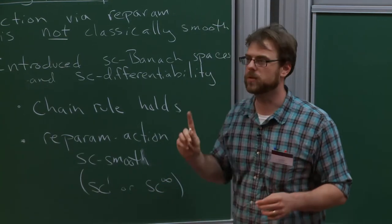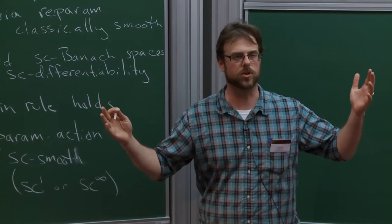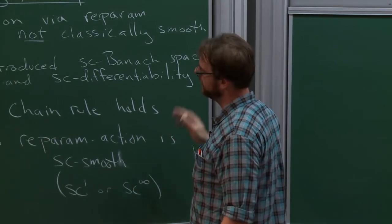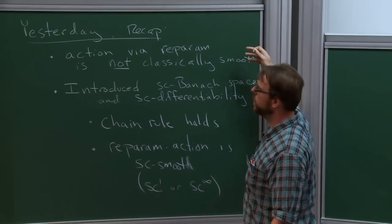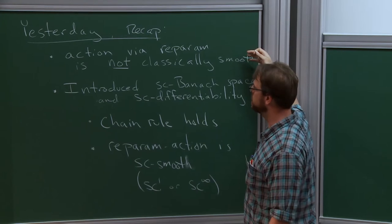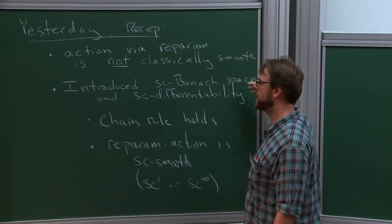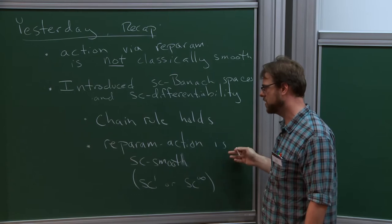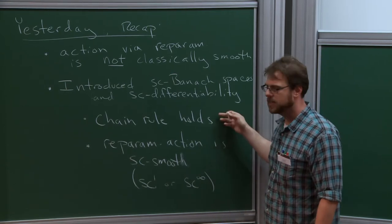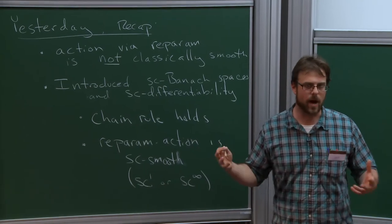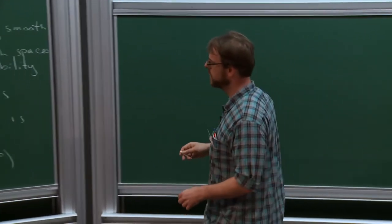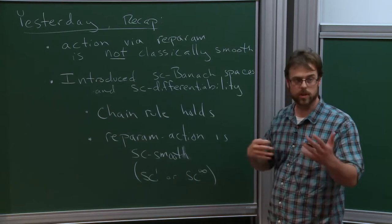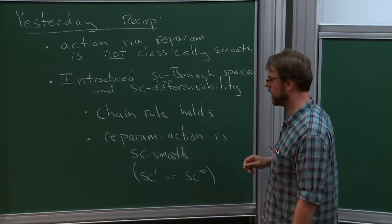The action of reparameterization is not classically smooth on the ambient space of functions you want to work with. It is a smooth action if your moduli space is cut out transversely and the action is restricted to that space. We said we'd really like to have this action on this total ambient space be smooth in some sense. So we introduced scale Banach spaces and scale differentiability. As a consequence we had two key facts: first, the reparameterization action is SC smooth; and the chain rule holds, meaning we now have a new notion of differential calculus. Reparameterization acting smoothly meant we could build transition charts with some notion of smoothness between them — something like a scale Banach manifold in toy cases.